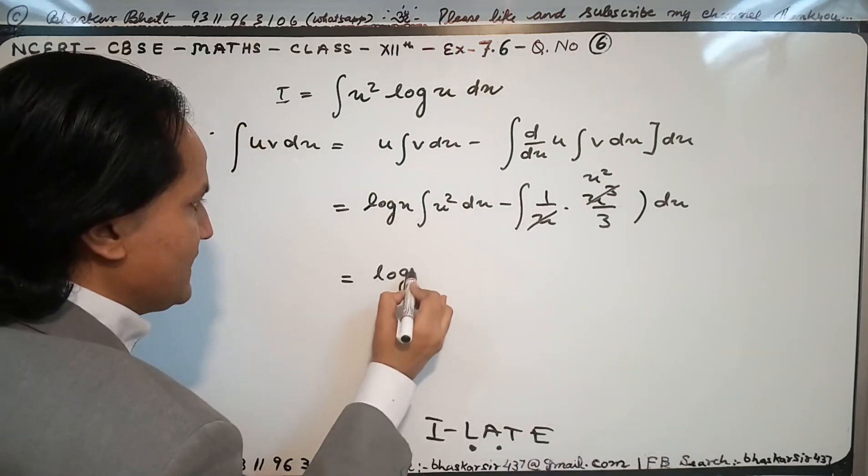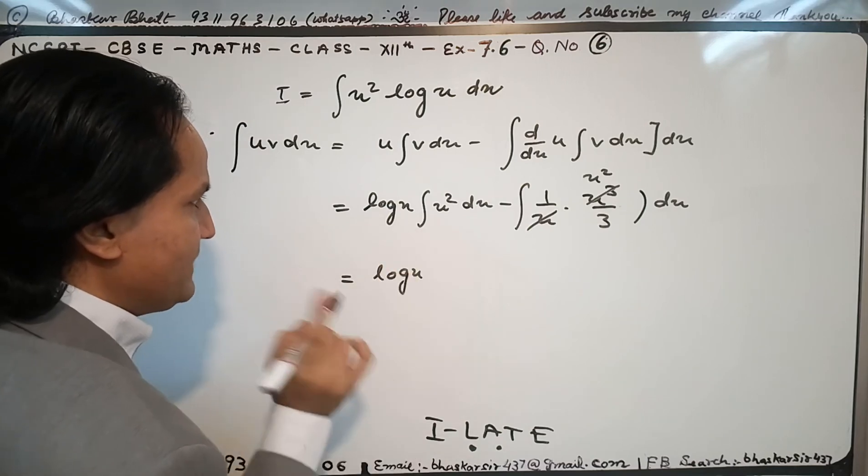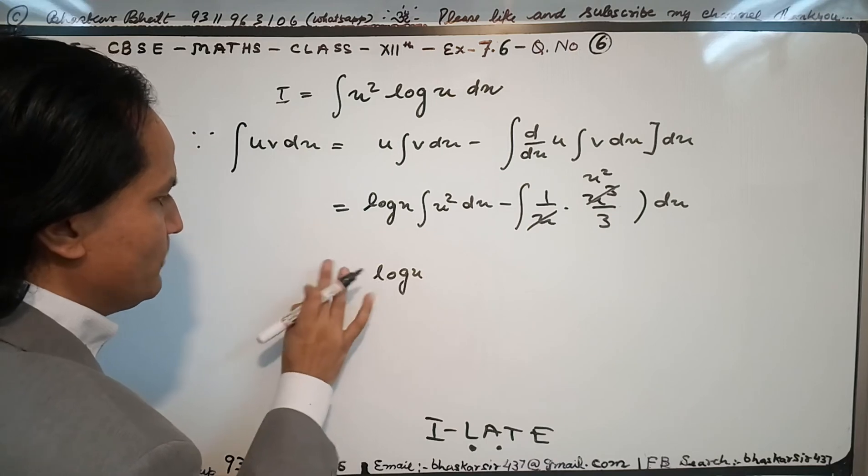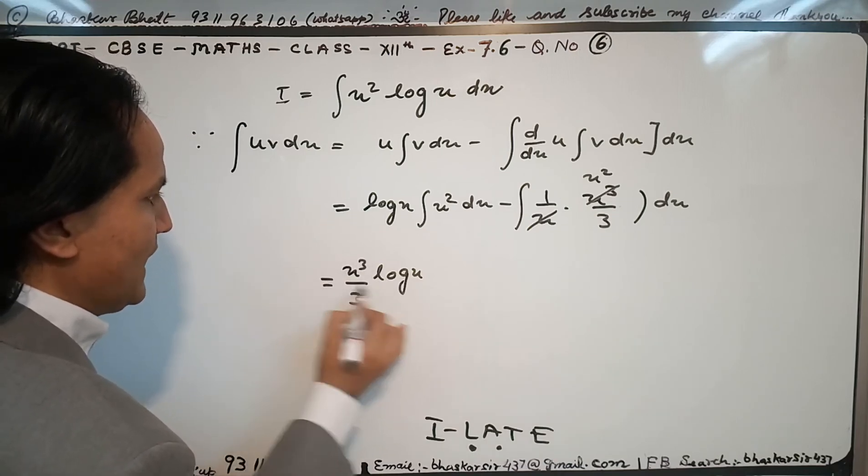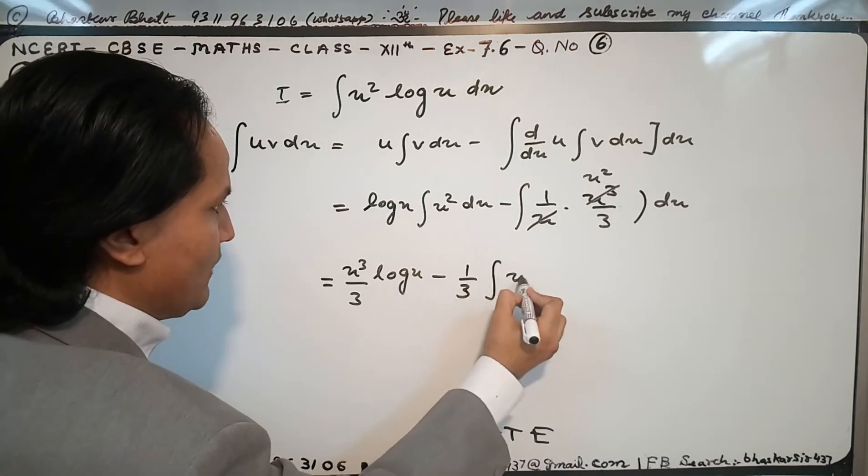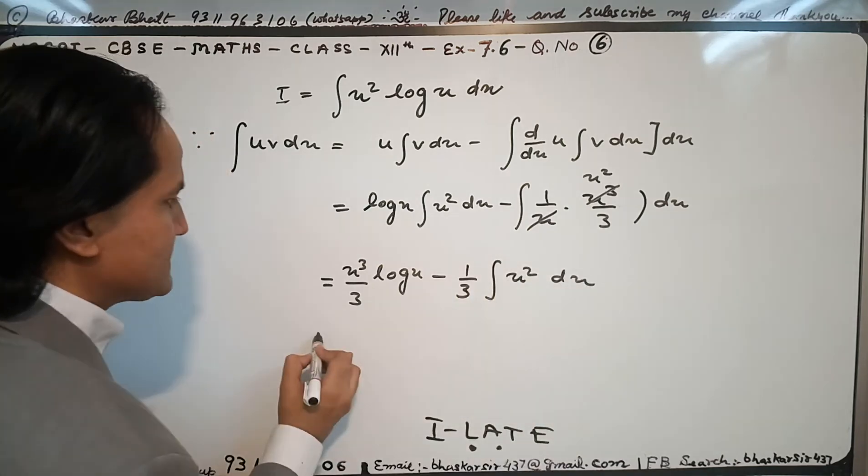Log x, and integrating x square, we will find x cube upon 3, minus taking 1 upon 3 outside, I have now x square dx.